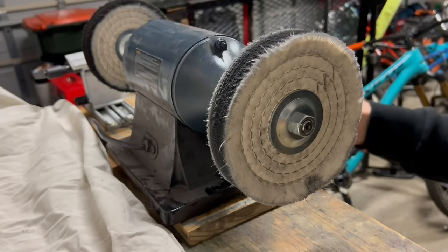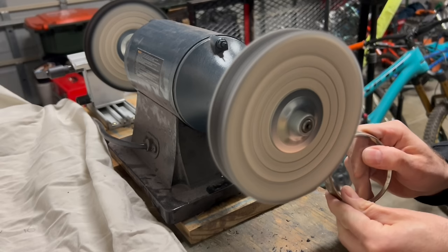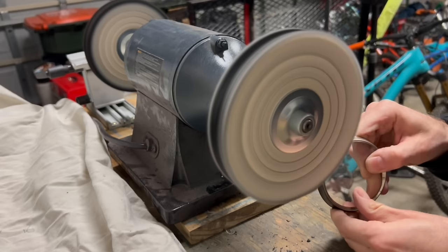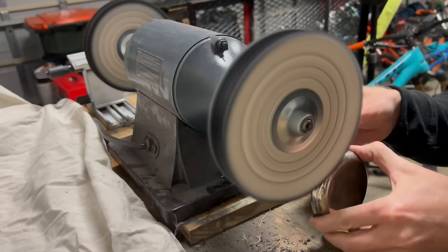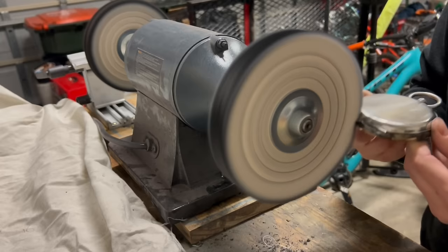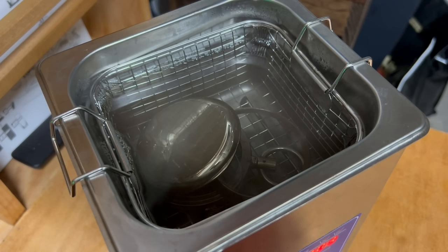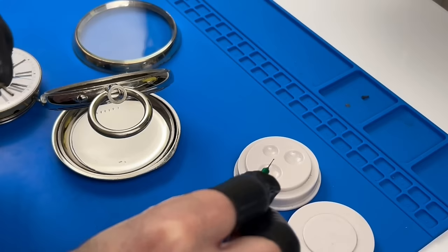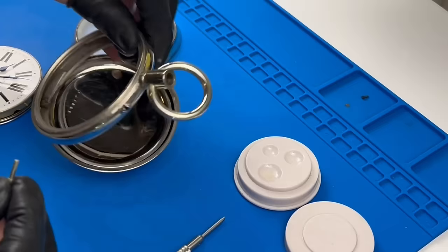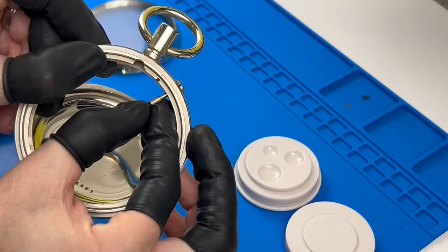The case itself receives a light polishing. As always, I try to strike a balance when doing so, because I want to improve the appearance but I don't want to overdo it. Otherwise, I risk smoothing over any crisp edges in the process, so the deeper scratches and imperfections will still remain. The setting mode enabling pin is now reinstalled.